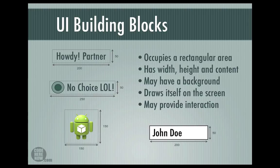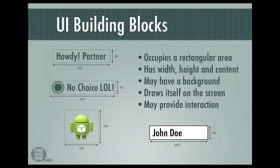Each view is responsible for its own drawing. In case of a radio button, the radio button is responsible for drawing the circular indicator and the text on the screen. In case you are writing your own view, you have to write the code that allows the view to draw itself on the screen. In case of an edit text, the view draws the background, the text, and also the animated blinking cursor. Views may provide interaction — it is not mandatory, but if they have an event handler that can handle events, you can interact with the view.